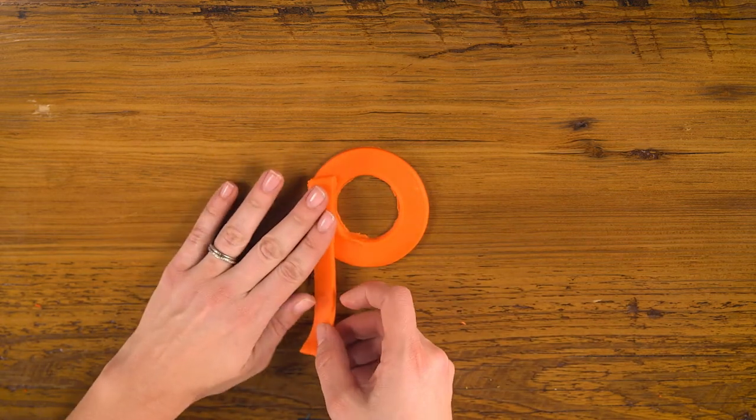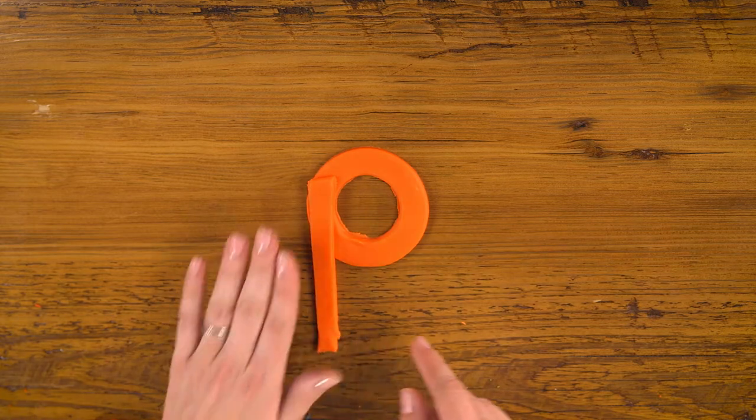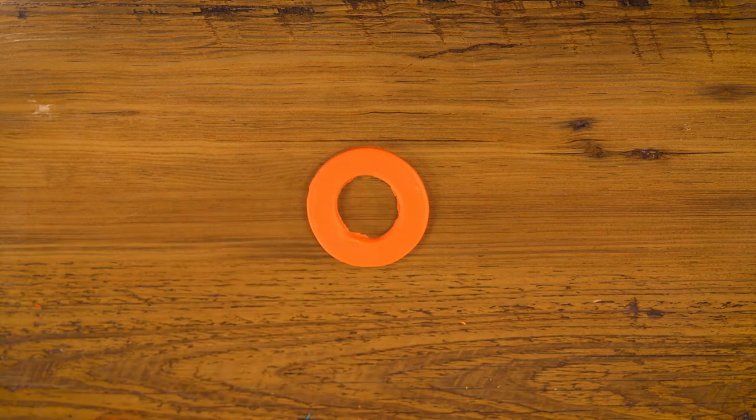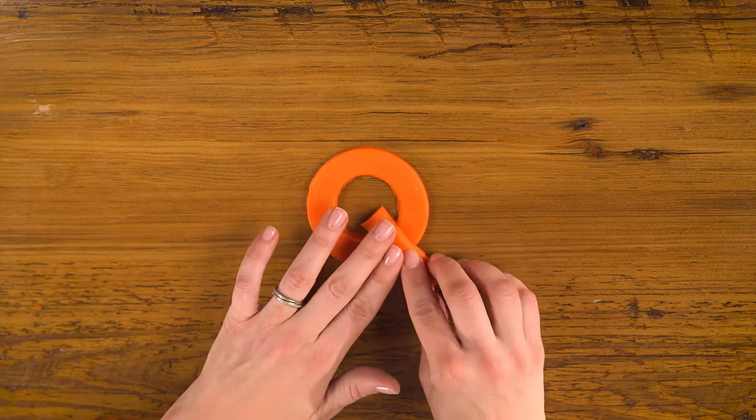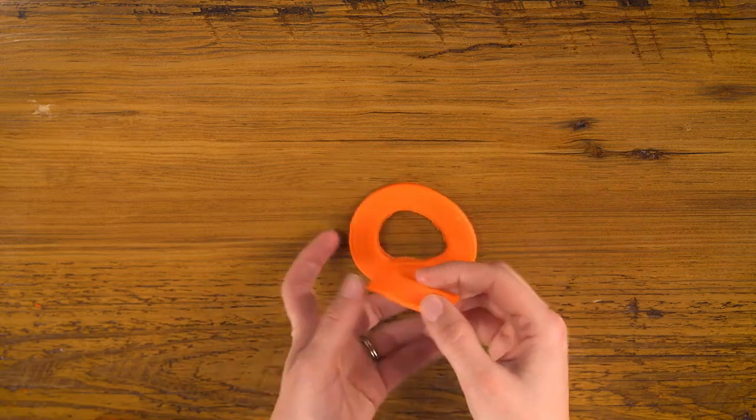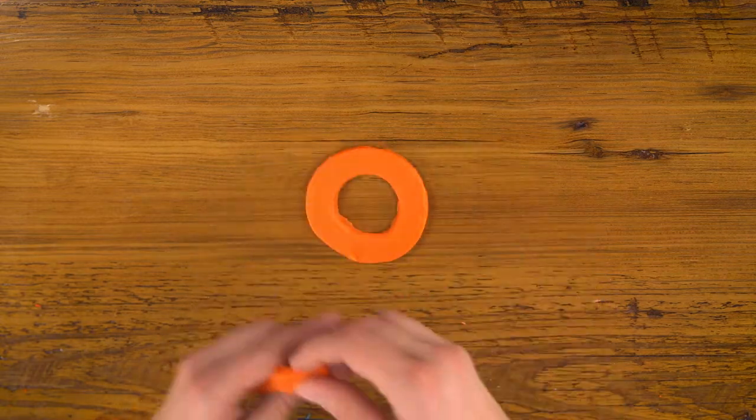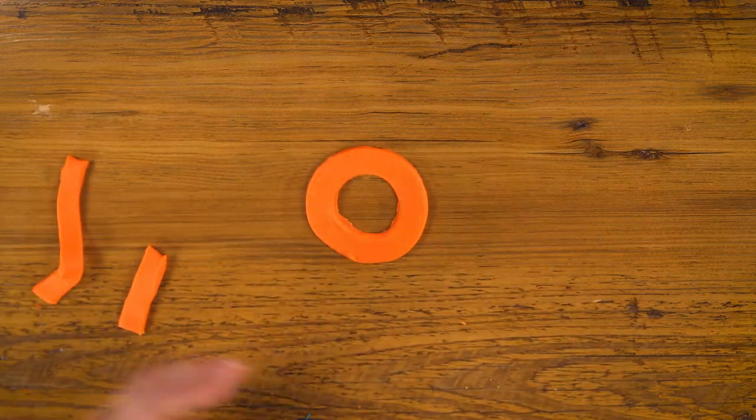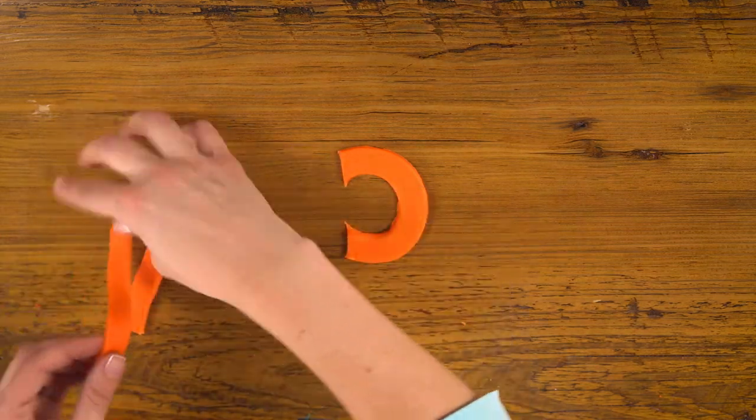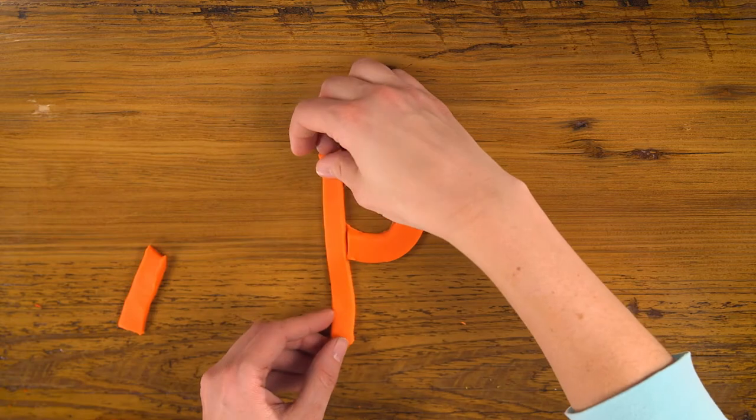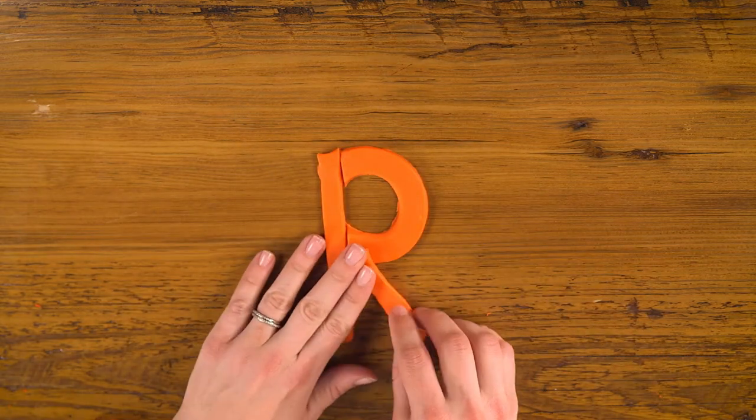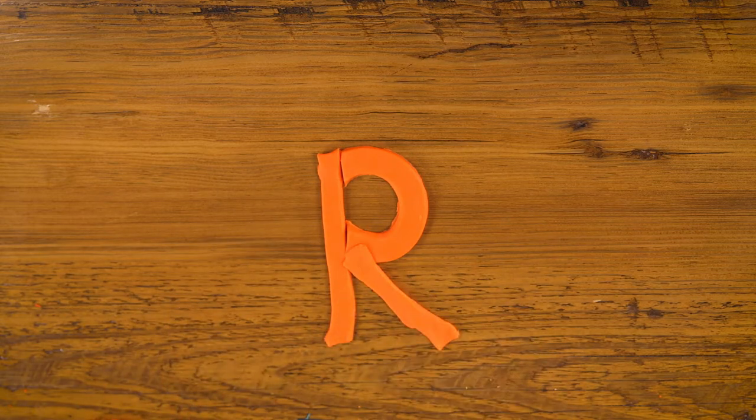For P, I'll cut a long strip for my leftover pancake and put it there. For Q, let's put a little strip in right there. There's our Q. For R, I'll cut the back of our circle off. We'll add a strip back in here and a little leg there. And there's our R.